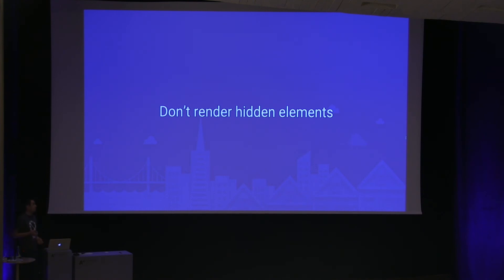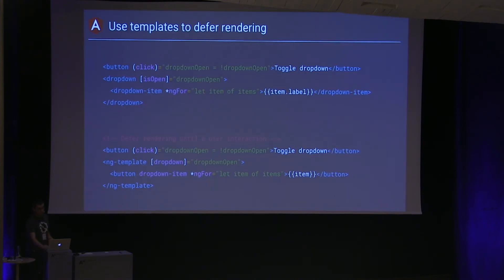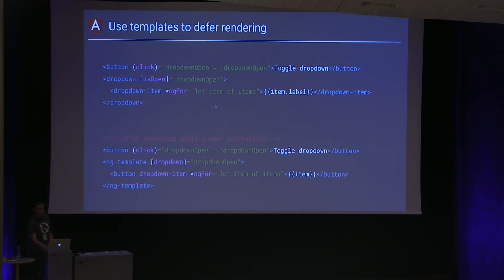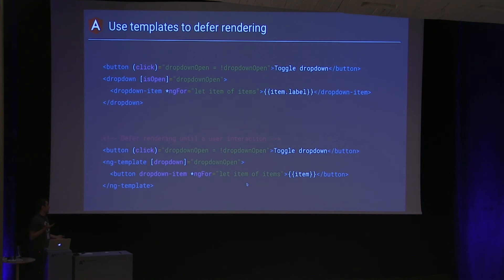Another tip is that you shouldn't render elements that aren't necessary. Here's an example of a dropdown — you have the button that shows it, and the dropdown itself with a bunch of items, which is probably display none. However, this still renders all of those menu items in the background. What you can do instead is implement the dropdown as a template, which won't be rendered until you decide to render it. This makes sense because you really don't need those items until the user actually clicks the button.